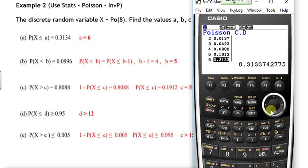So for part A of the question, we've got 0.3133, so that matches up with a value of 6.